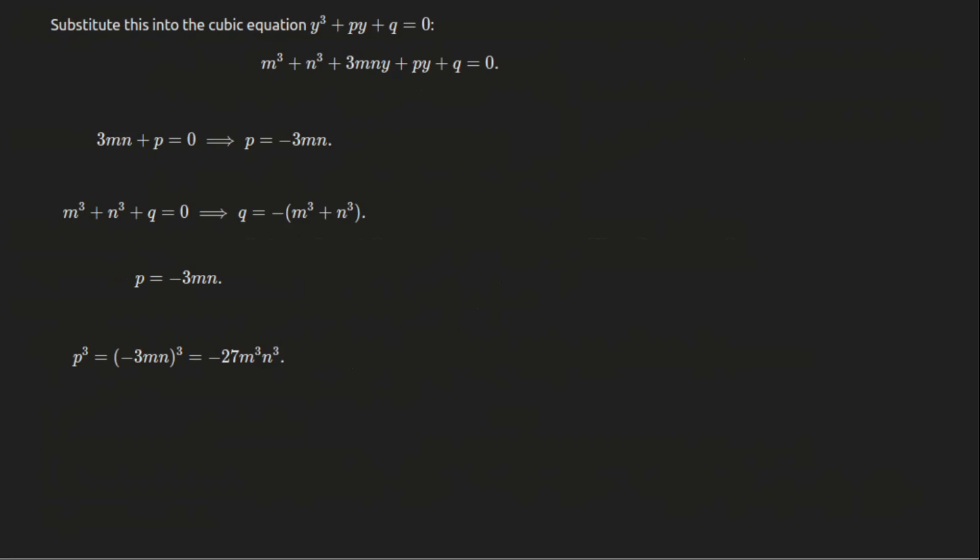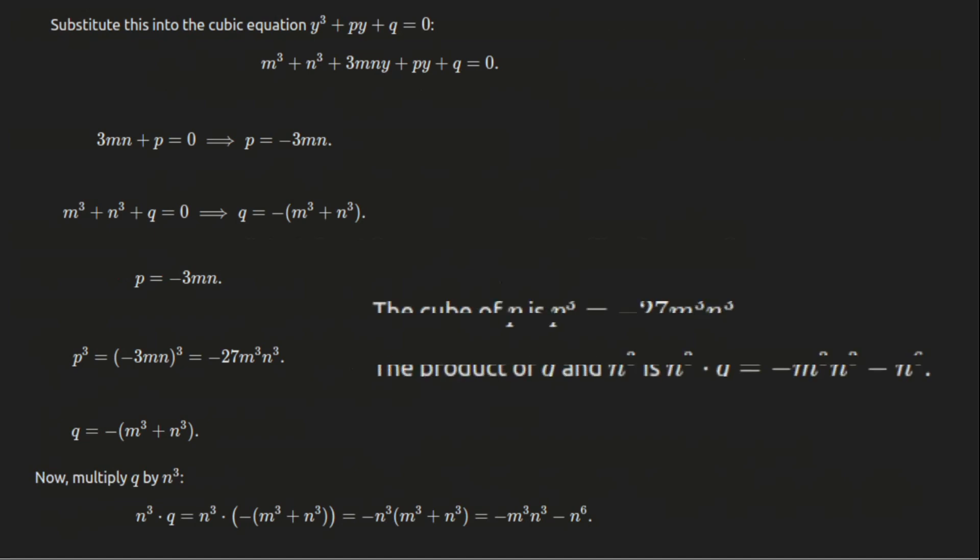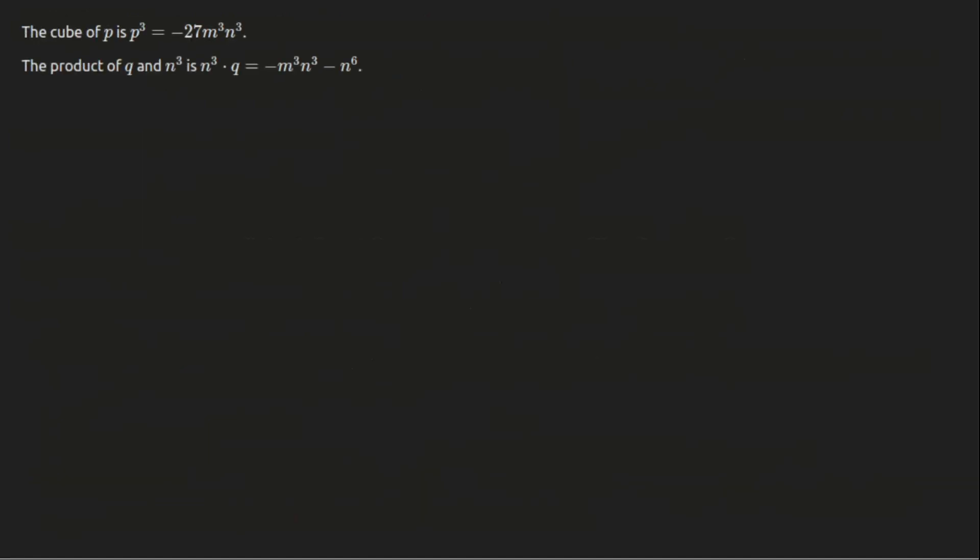To move forward, we cube the p term to help relate it to the other terms, and then multiply the q term by n³. This establishes a relationship between m³ and n³. Next, we substitute that m³n³ = -p³/27. With this, we rewrite the second equation, making the next step easier.